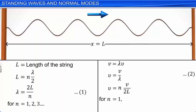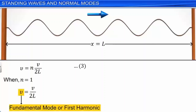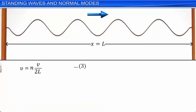The natural frequencies of a string are integral multiples of the lowest frequency. When N = 1, ν = V/2L, which is the lowest frequency. The oscillation mode with this lowest frequency is called the fundamental mode, or the first harmonic. By taking values of N = 2, 3, and so on, we obtain the second harmonic, third harmonic, and so on. The frequencies are denoted ν2, ν3, etc. The collection of all possible modes is called the harmonic series, and N is called the harmonic number.